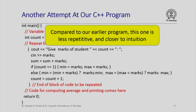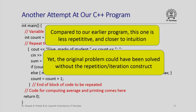This code is closer to our intuition because we have just written down the statements we want to execute for each of the 10 students and are simply saying repeat this 10 times. In this case the original problem could have been solved without the repetition construct — meaning that here the repetition construct gives us convenience and allows us to write the program closer to our intuition, but it is not absolutely necessary. We will soon see a situation where the repetition construct becomes absolutely necessary.